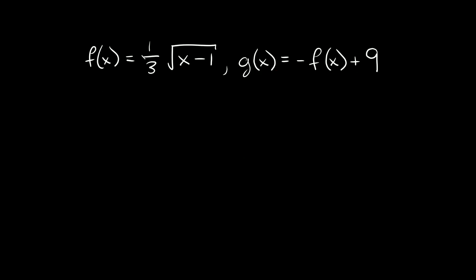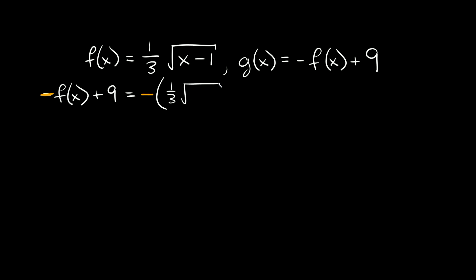Now here we're given that f of x is equal to one-third times the square root of x minus one, and g of x is equal to negative f of x plus nine. So again we're going to replace f of x with what we're given, so it's negative f of x plus nine. You can see we have a negative symbol out front in front of f of x, so we're going to write negative times f of x. And f of x is one-third times the square root of x minus one, so I'll put that in parentheses. Then lastly we have this plus nine at the very end.